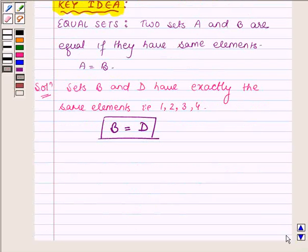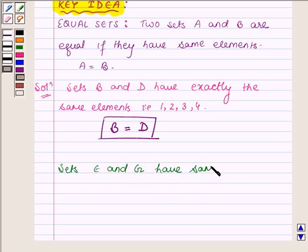Similarly, on observing we find that sets E and G have same elements, that is minus 1 and 1. So the sets E and G are equal.